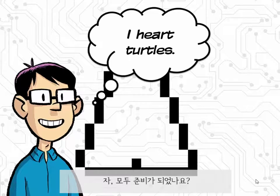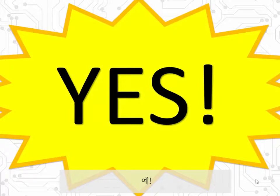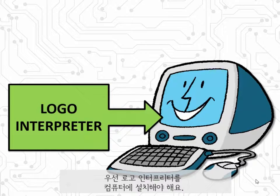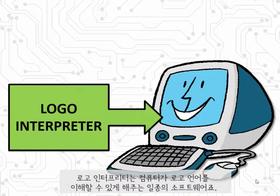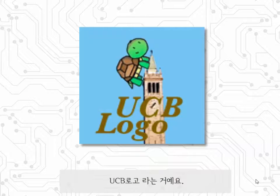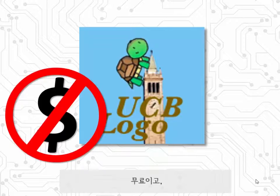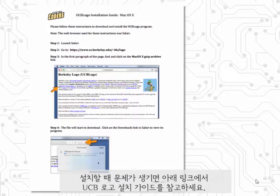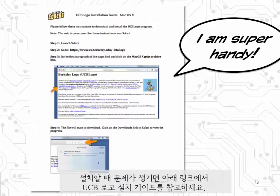So are you ready to get started? The first thing you'll need to do is install a Logo interpreter on your computer. This is a piece of software that makes it so that your computer can understand the Logo language. There are lots of different Logo interpreters out there, but the one we're going to use in this lesson is called UCB Logo, which is awesome because it's free and was also created at UC Berkeley. To download UCB Logo, just go to this URL. If you have any trouble, check out the super handy Secret Coders UCB Logo installation guides, which are linked right below.